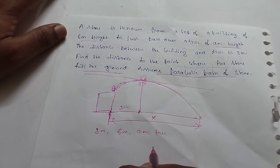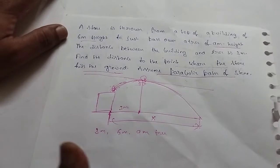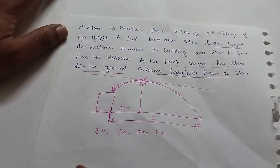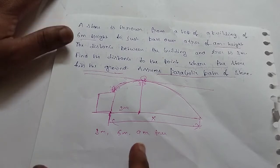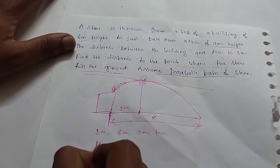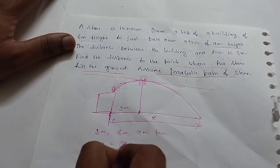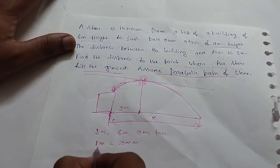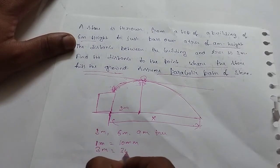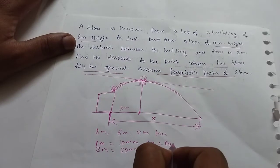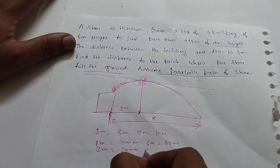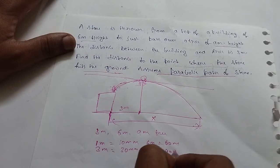Because the drawing sheet is very thick at actual scale, I am taking 1cm equal to 10mm. So 3m equals 30mm, 6m equals 60mm, and 9m equals 90mm. This is my scale.